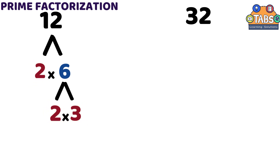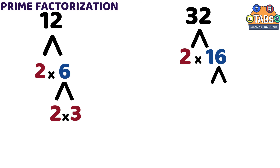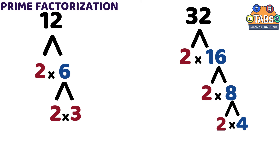Then let us find the factors of 32, which are 2 and 16. While 2 is a prime number, 16 is not, so we will get the factors of 16. The factors of 16 are 2 and 8. While 2 is a prime number, 8 is not, so we will get the factors of 8, which are 2 and 4. While 2 is a prime number and 4 is not, we will get the factors of 4, which are 2 and 2. Both 2s are prime numbers, so we can stop right here. The prime factors of 32 are 2 times 2 times 2 times 2 times 2.